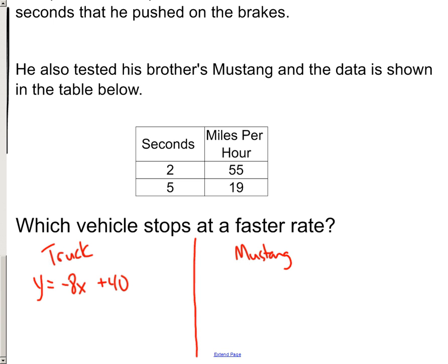The slope is y minus y over x minus x. So 55 minus 19 would be my y's, and 2 minus 5 would be my x's. So 55 minus 19 is 36, and 2 minus 5 is negative 3. That means that my slope is negative 12, or we could also call it our rate of change.